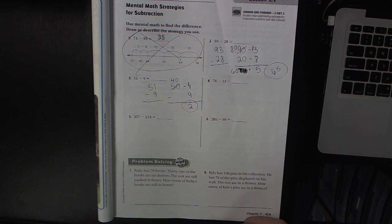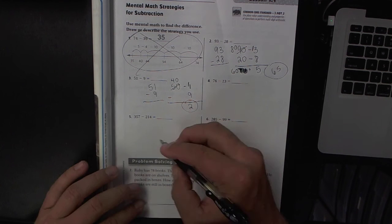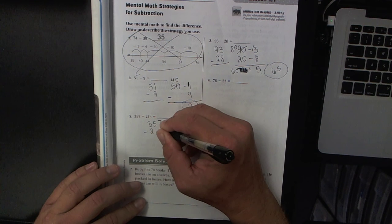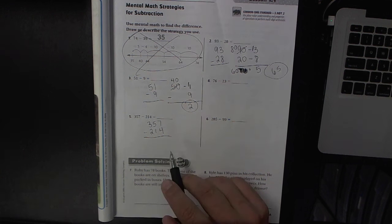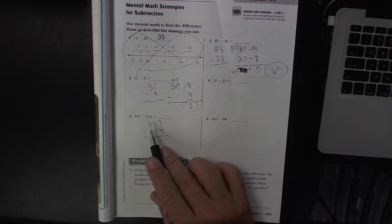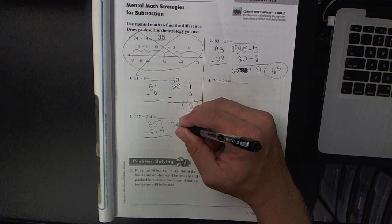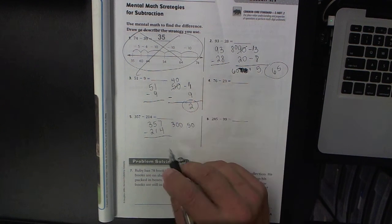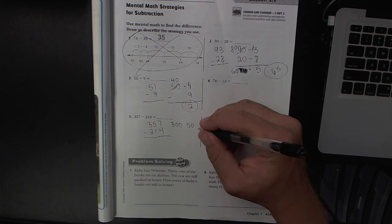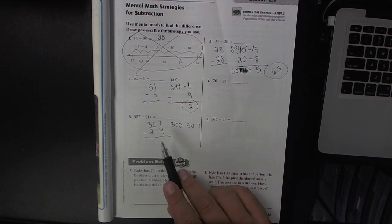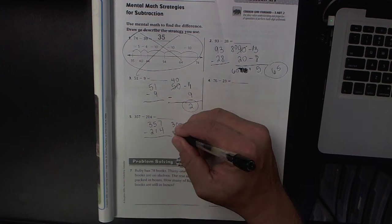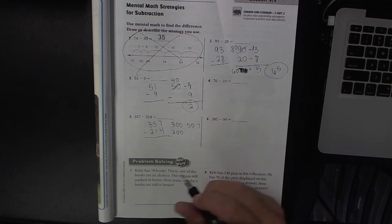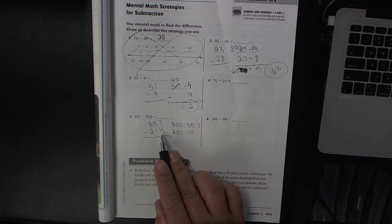Let's look at number 5. Once again you want to write it vertically and break it apart by place value. The 3 is worth 300, the 5 is worth 50, and the 7 in the ones is worth 7. The 2 in the hundreds place is worth 200, the 1 in the tens place is worth 10, and the 4 in the ones place is worth 4.